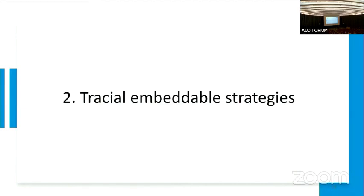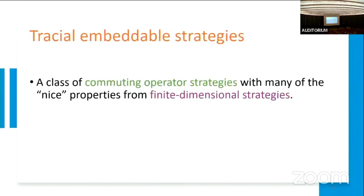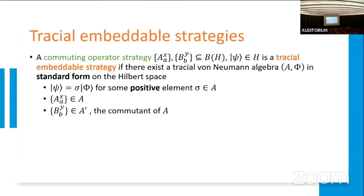Many of these implications are actually not realized in the infinite dimensional case in general. And this is what our work is designed to solve. We consider a class of strategy called tracial embedded strategies. The way you should think about tracial embedded strategy is a class of commuting operator strategies that really contains the nice property from the finite dimensional case. So I'll first give the formal definition, please don't get scared. A commuting operator strategy is a tracial embedded strategy if there exists a tracial von Neumann algebra A in the standard form on the Hilbert space, such that psi equals sigma phi for some positive element sigma. And Alice's observable A_X^A is in the algebra under this representation, and Bob's observable B_Y^B is in the commutant of this representation.